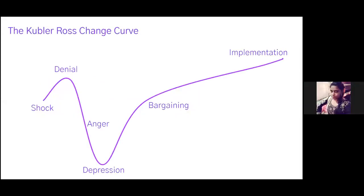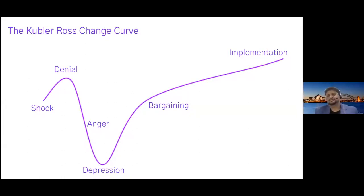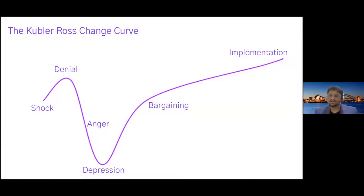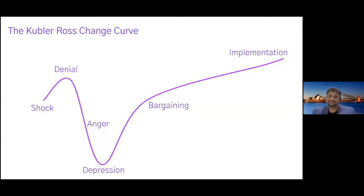The Kubler-Ross change curve — whenever your mind goes through any change, and specifically in offices and corporates, and how you can apply what you learn here in your corporate life when you take that step in the next couple of years — whenever any change happens, people go through this curve in their mind. The stages are: shock, denial, anger, depression, bargaining, and implementation.